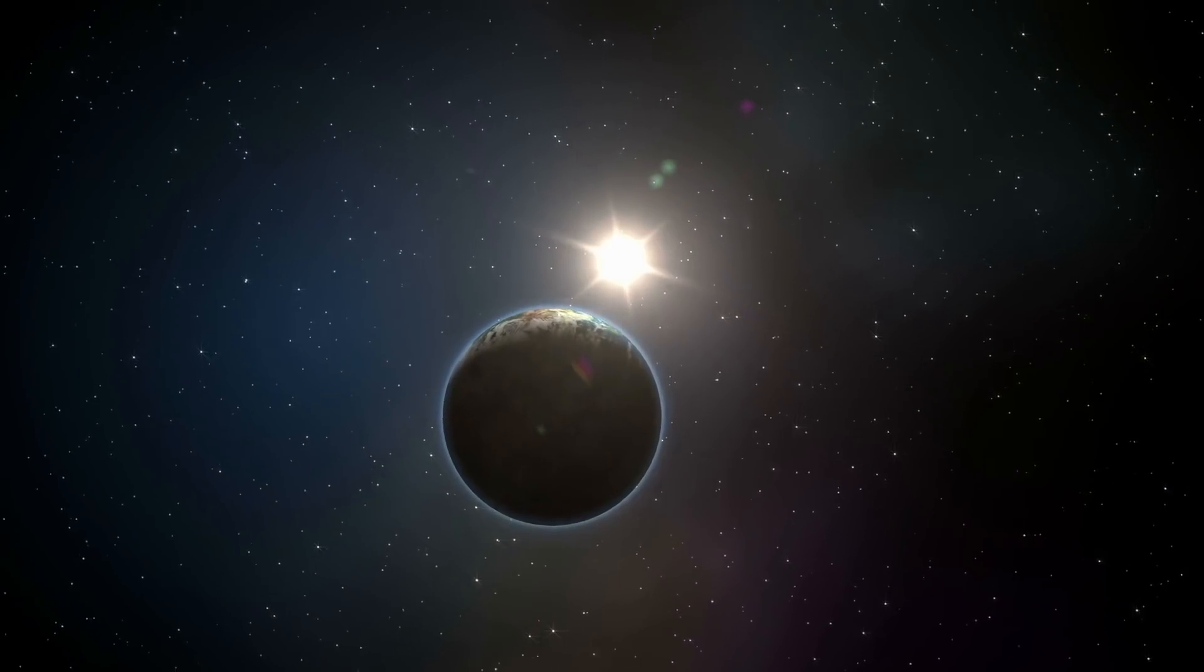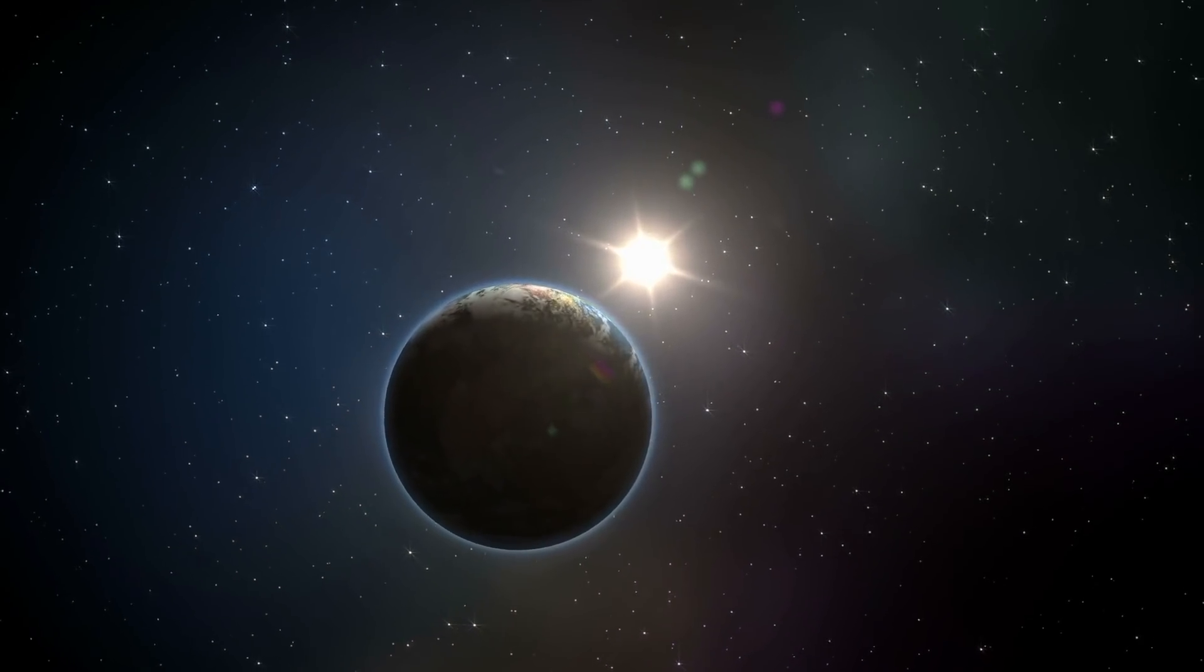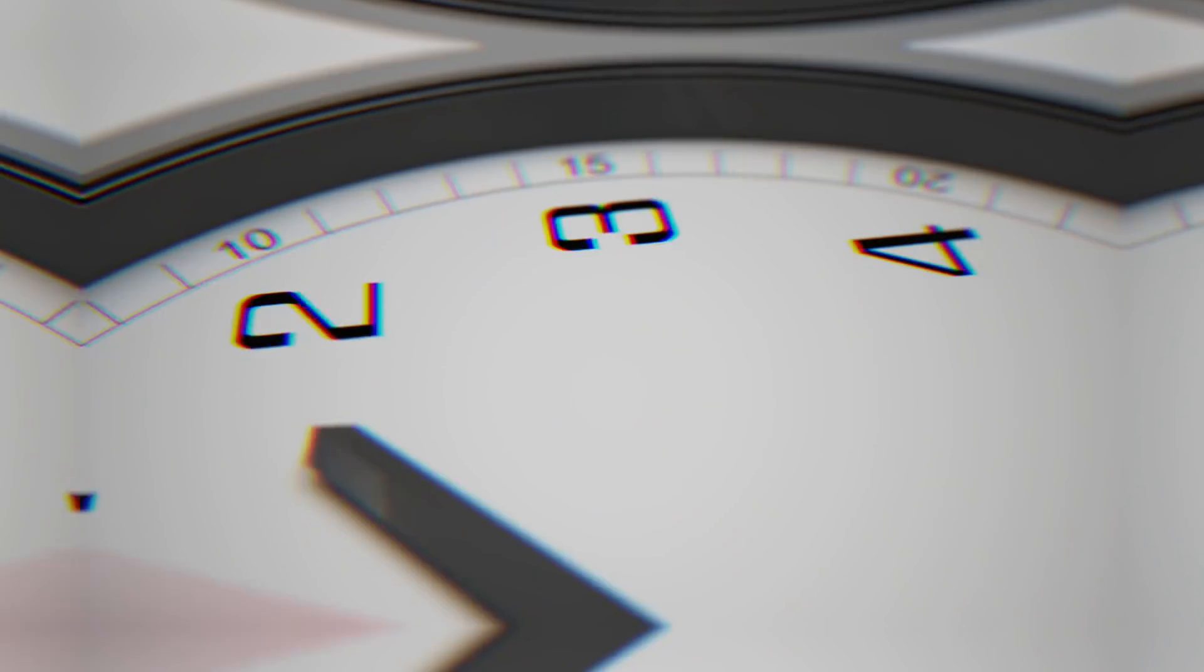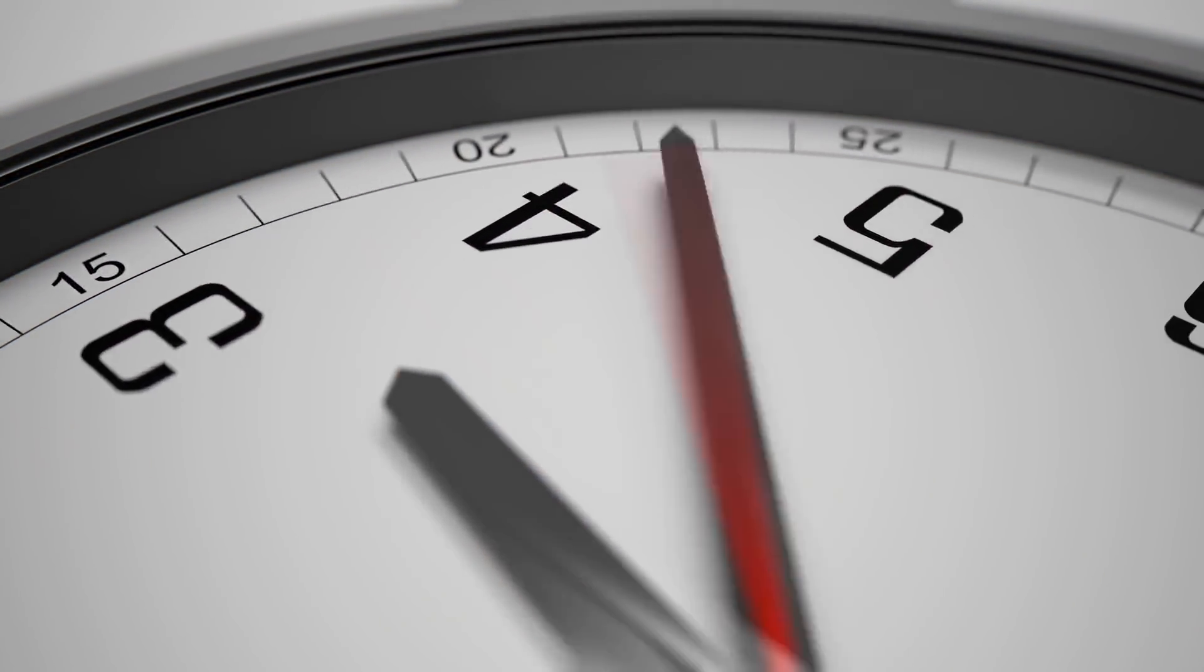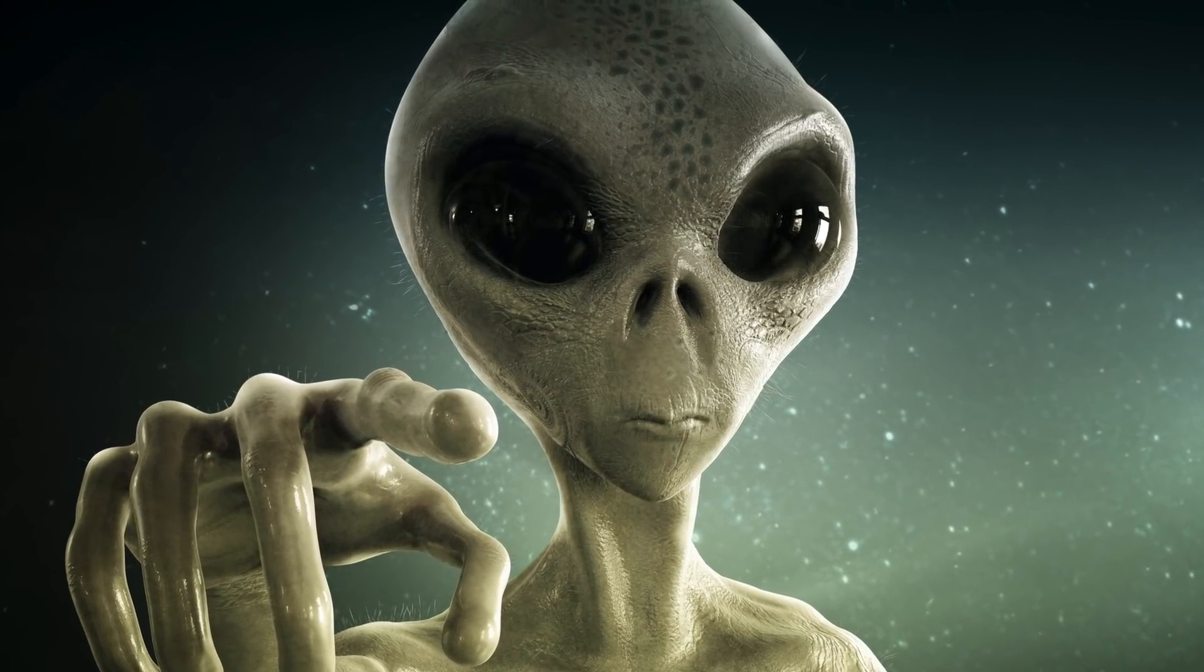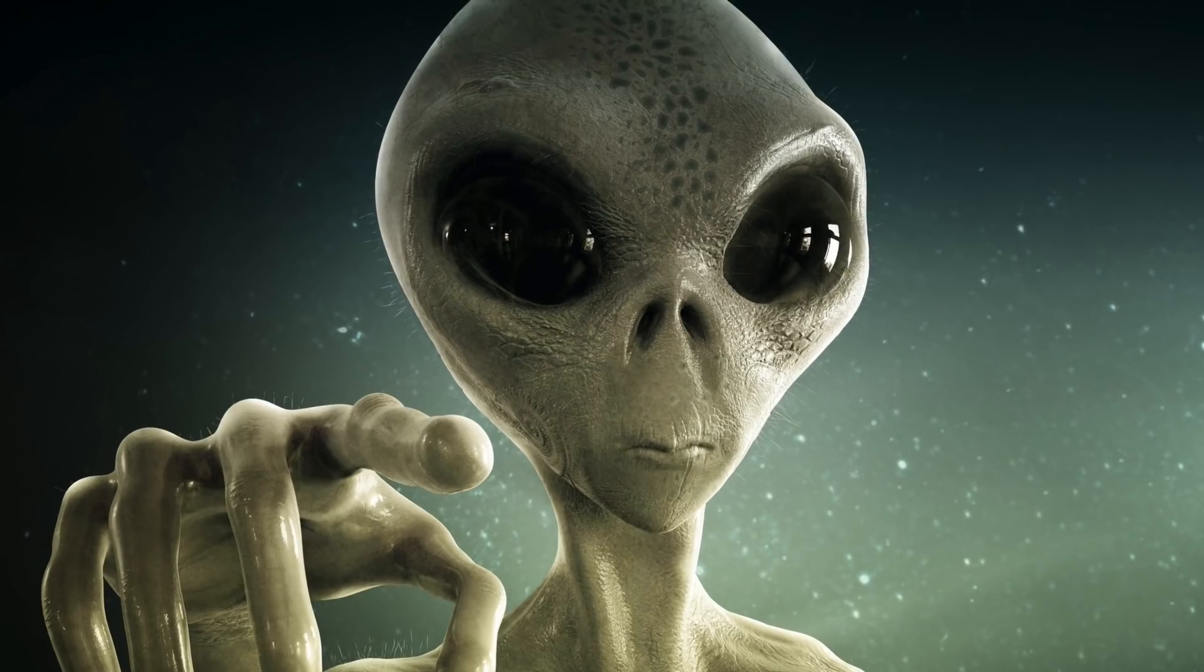Of those, 508 have viewing angles that give them at least 10 hours of observational data every time Earth moves between that location and the Sun. Ideal conditions for spotting this small, rocky planet and the signs of life in its atmosphere.